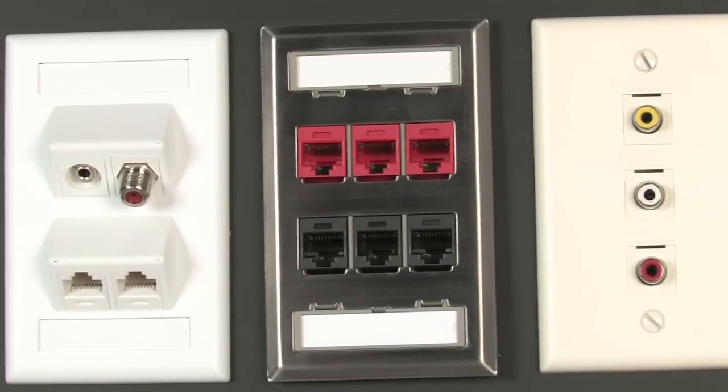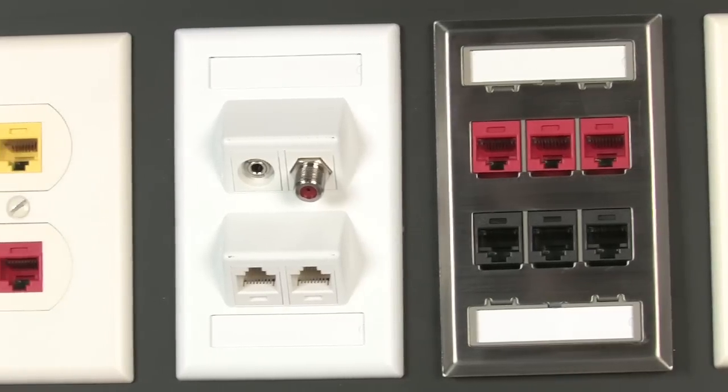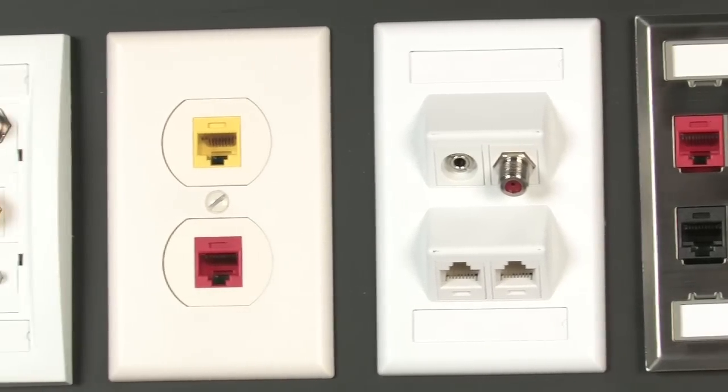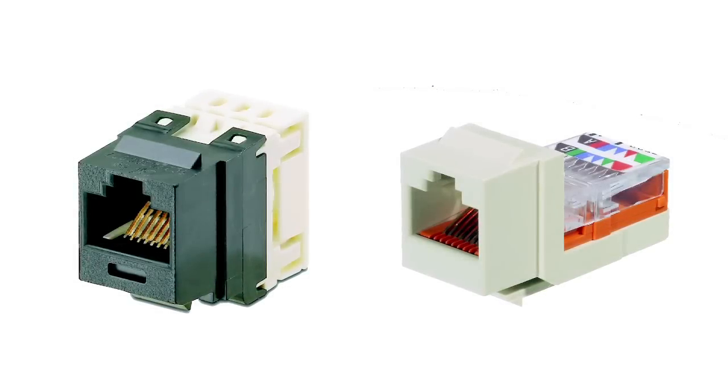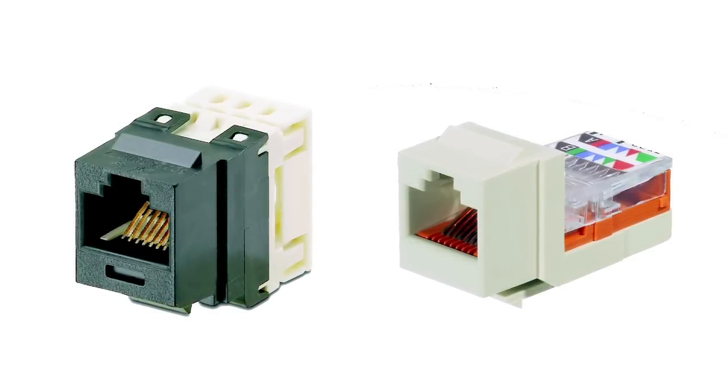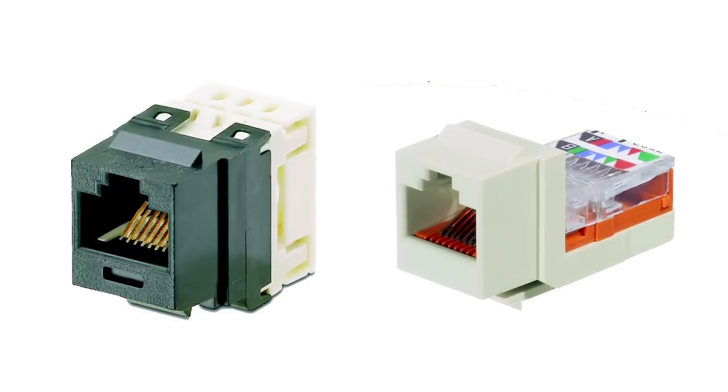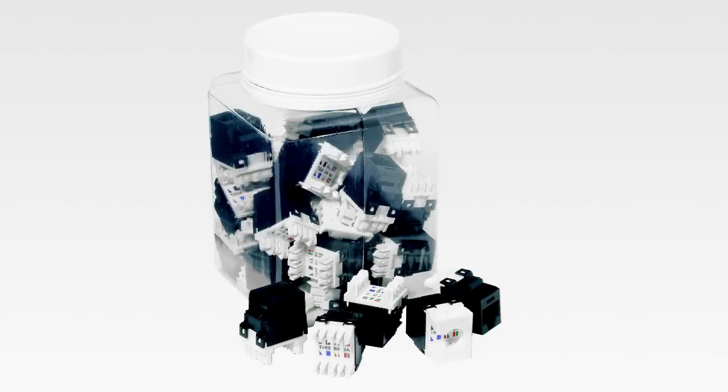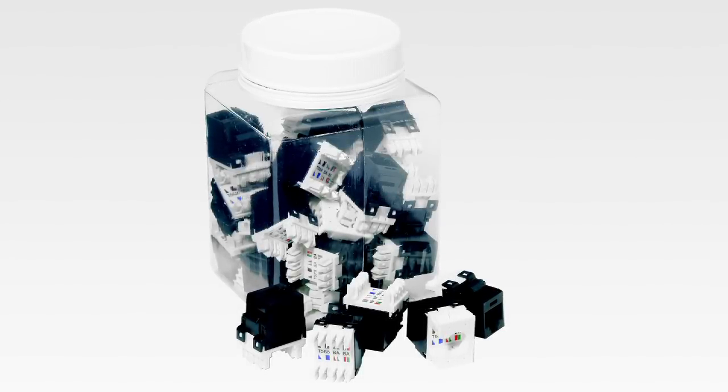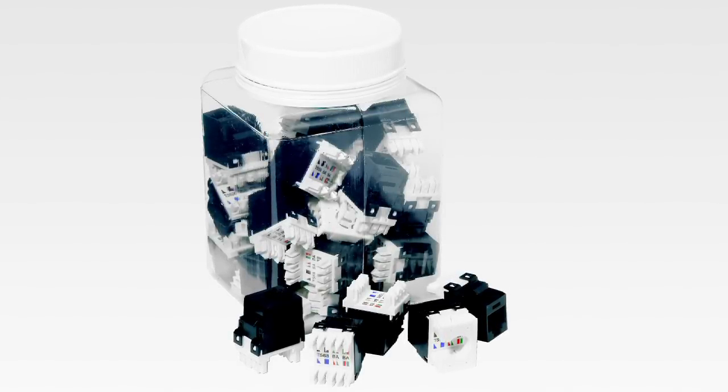With NetKey, we have incorporated several features that make the system user-friendly. Our copper jack modules are available in various termination styles to accommodate an array of preferences. Both Category 6 and 5E jacks are available in punch-down and tool-less termination styles. Jack modules are also available in contractor convenience packs of 25 jacks for ease of ordering and less packaging.